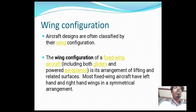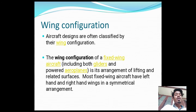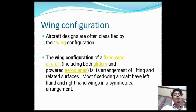Now we will see wing configuration. Aircraft designs are often classified by wing configuration. The wing configuration of a fixed-wing aircraft, including both gliders and powered airplanes, is its arrangement of lifting and related surfaces. Most fixed-wing aircraft have left-hand and right-hand wings in a symmetrical arrangement.